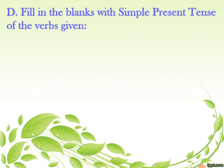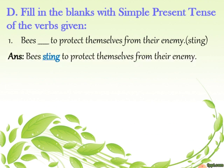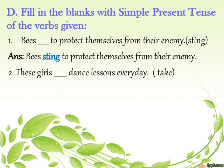Let's move on to the textbook exercise D: fill in the blanks with the simple present tense of the word given in the bracket. First sentence: Bees ___ to protect themselves from their enemy (bracket: sting). You have to see the subject — bees is in plural form, so no change. The answer is: Bees sting to protect themselves from their enemy.